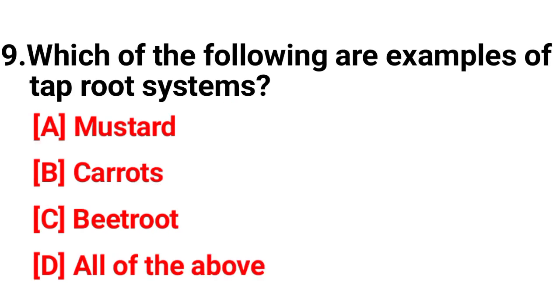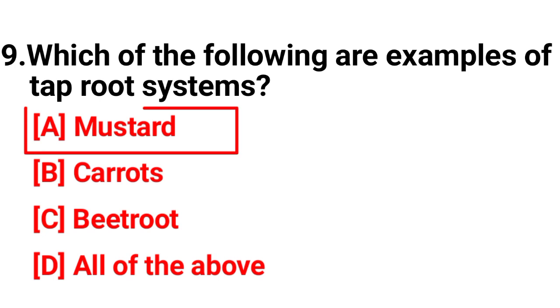Question number nine: which of the following are examples of a tap-root system? The correct answer is mustard.